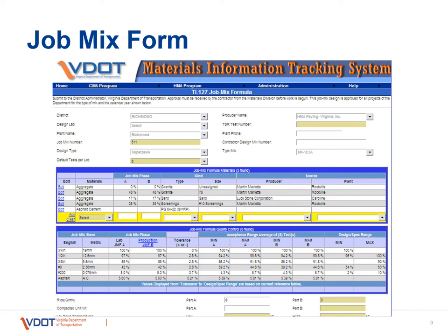Here we are with the job mix form, also known as the TL-127 job mix formula. This is not that different from a paper form that would be used in the past, but now a lot of the header or main information is submitted through PLAD for the VDOT users to approve in MITS. The district, the producer, ID numbers, and all that are fairly straightforward. The contractor will enter the weights of the different aggregates and the targets for quality control.